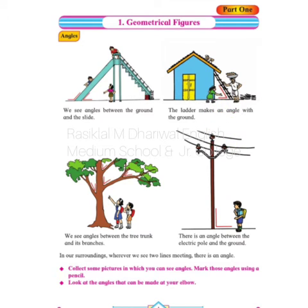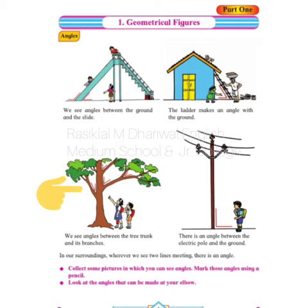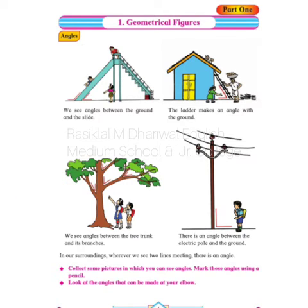In the third picture, we can see angles between the tree trunk and its branches. There are four angles we can see, and they are also marked in red. So these are some of the angles.